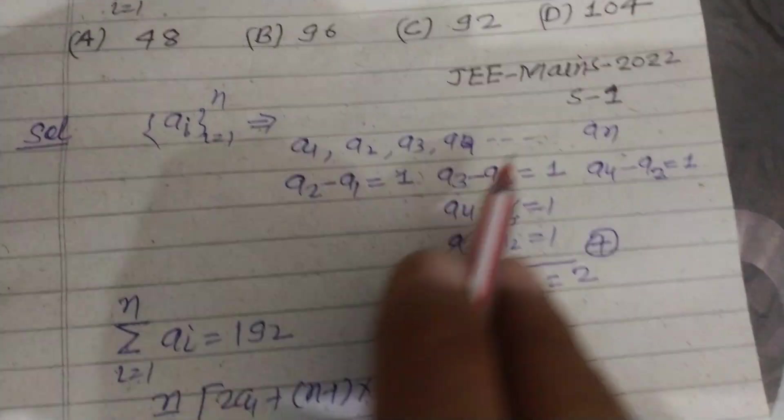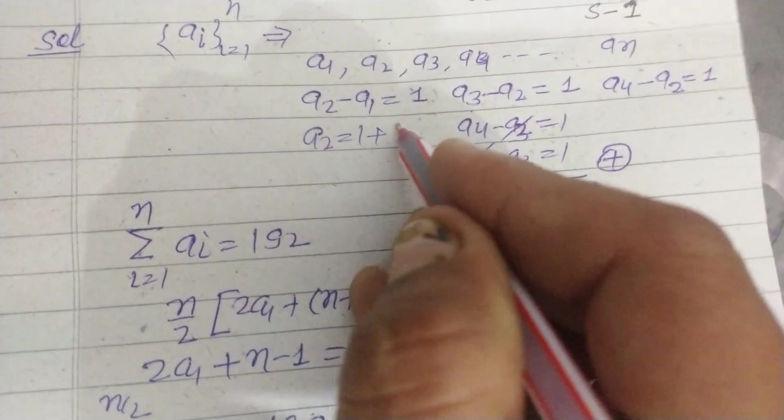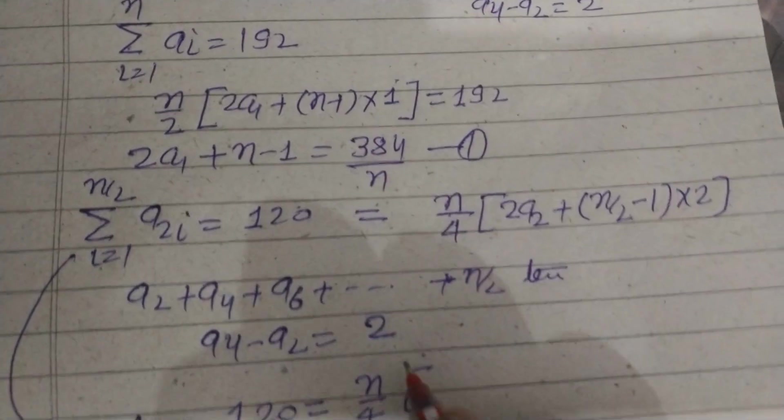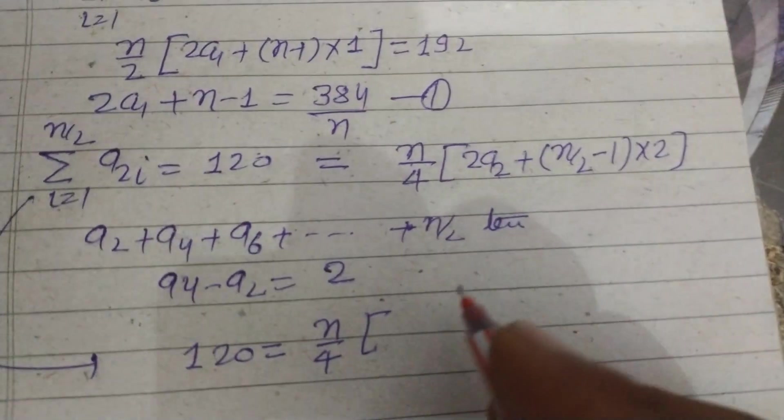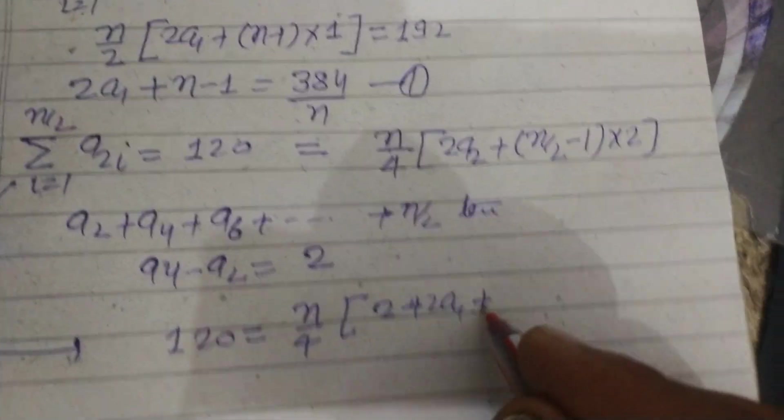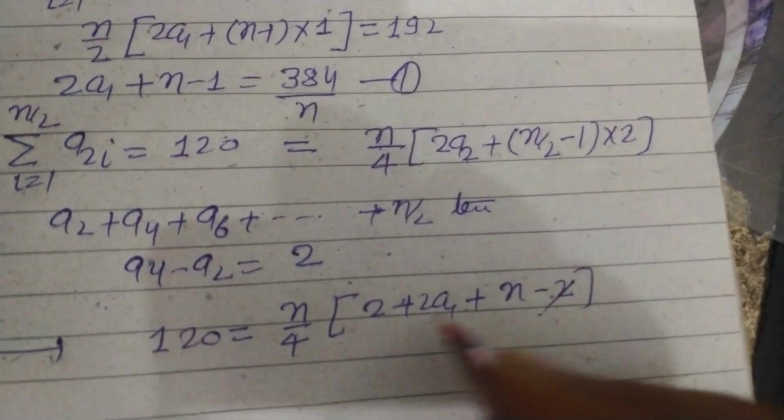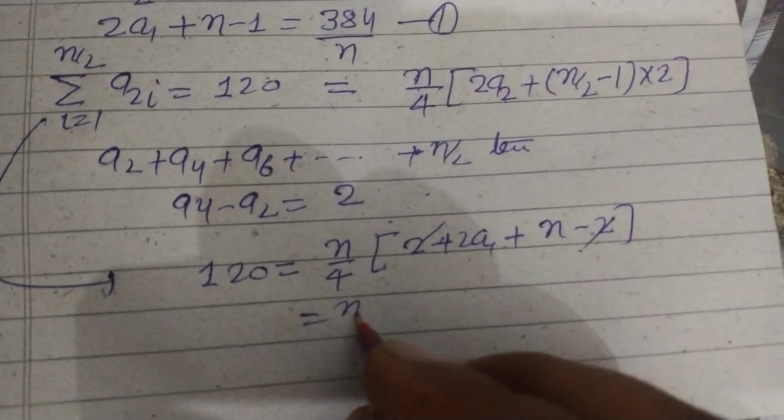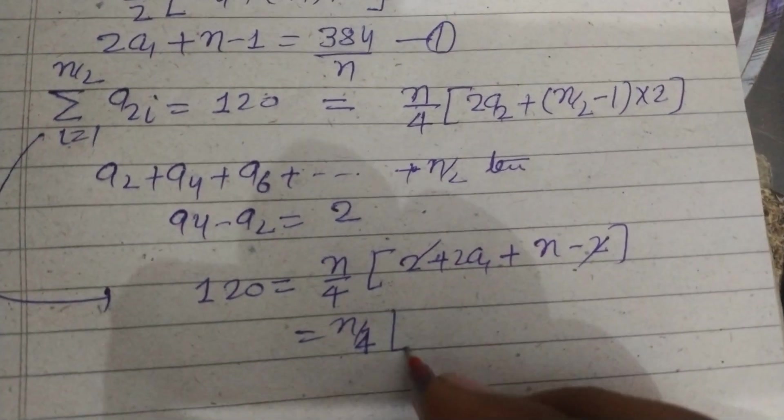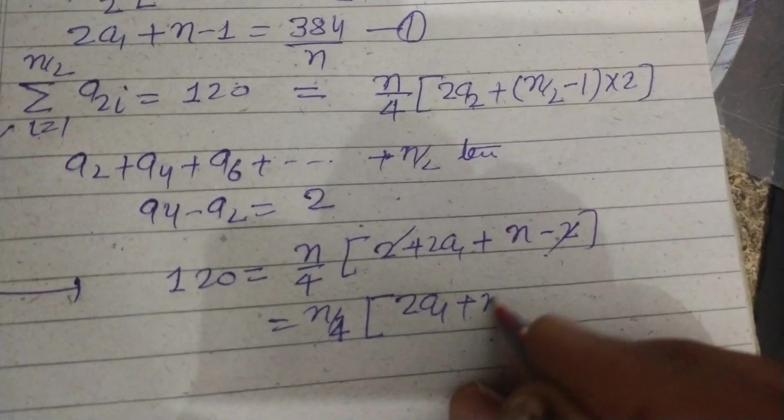Taking this as 120 equals n/4 times [2a2], we put a2 equals 1 plus a1. So we put 1 plus a1 in place of a2. Here we get 2 plus 2a1, and when we multiply this by 2 we get n minus 2. The 2s cancel, and finally we get n/4 times [2a1 plus n].